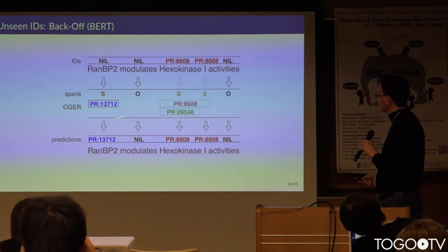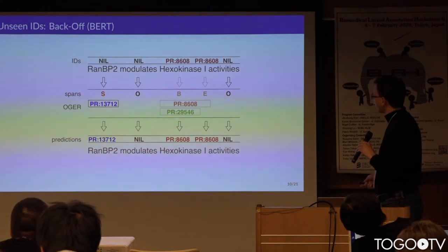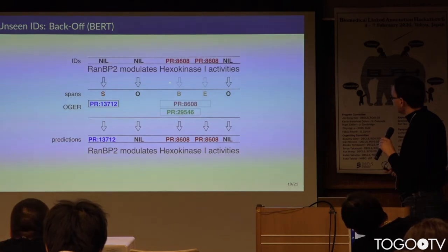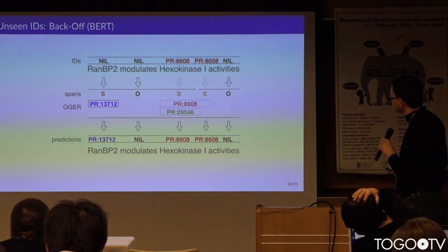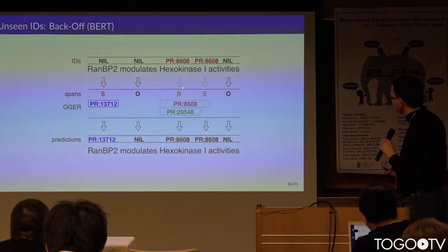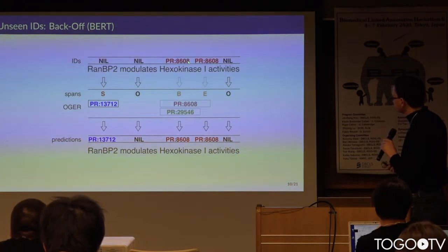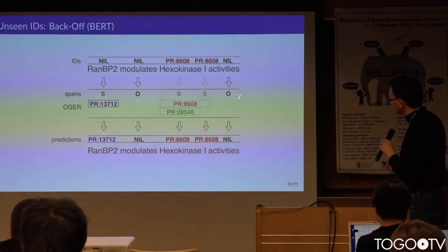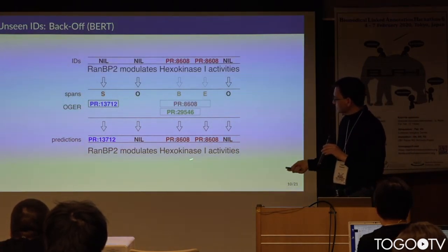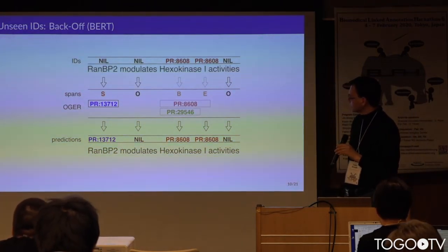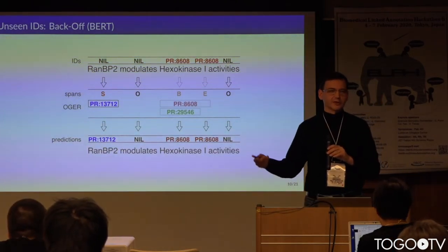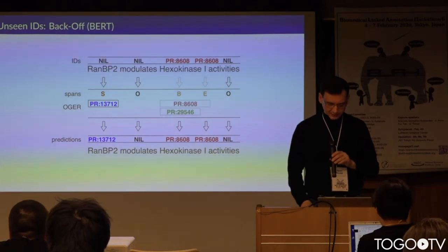For example, here we have a protein — exonuclease 1. The span recognition tells me this is a protein, and the ID recognition also gives me a protein ID. We have an agreement, so this is passed on as a solution. If there were no agreement, we would not accept that as a possible annotation.